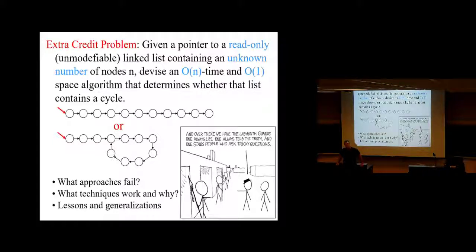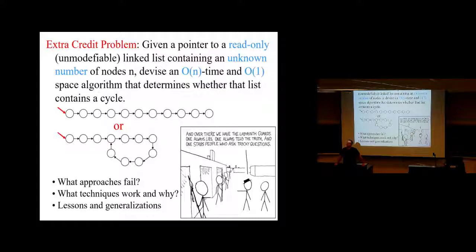How many solved this problem? Okay, that's good. How many worked on this problem? It should be all of you. Any thoughts about how to solve something like this? What's a good algorithm that satisfies this criteria — time proportional to the length of the list, but only a constant amount of extra space at most?